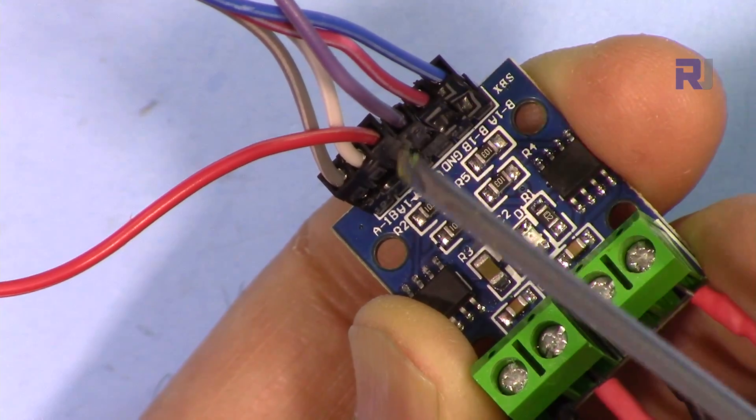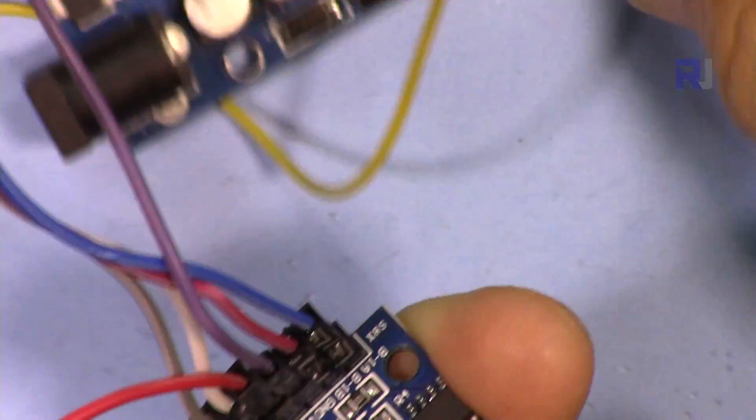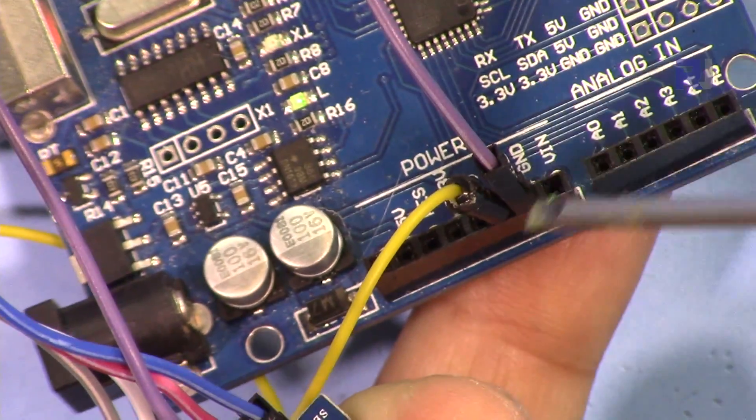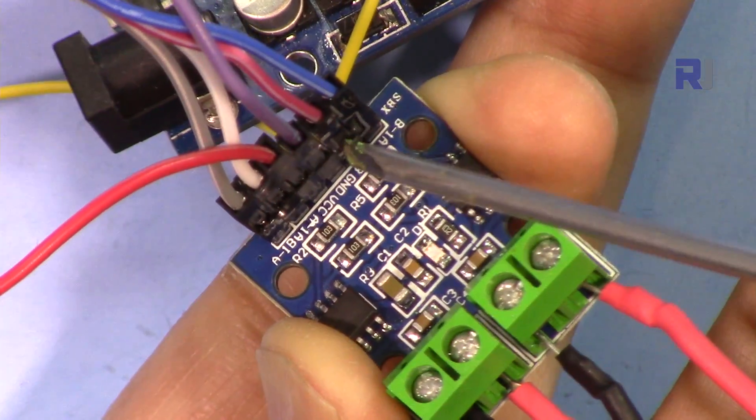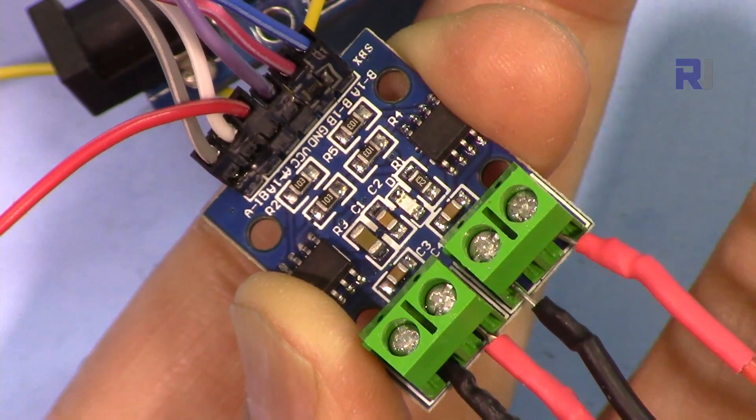For both of these, these are the inputs. Then the middle one here, this is ground which is connected to the Arduino ground here. This is the VCC. Because the motors that I'm using are 12 volts, I have connected it to 12 volts external.